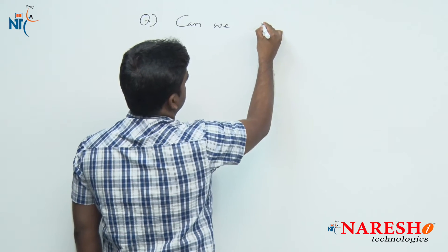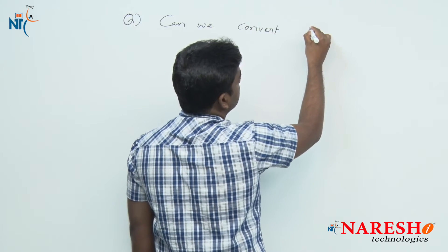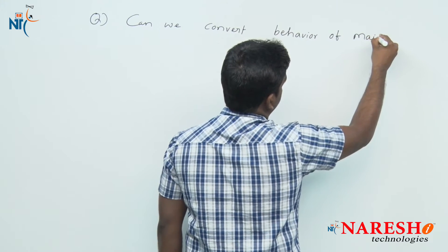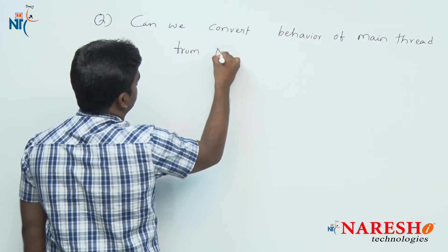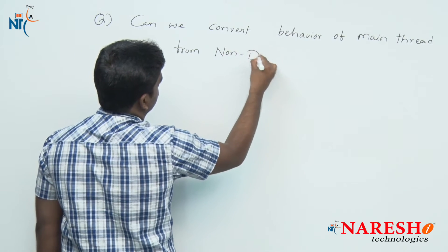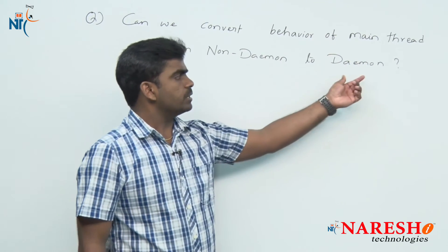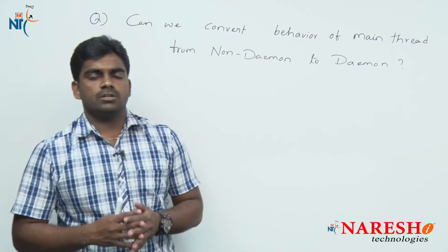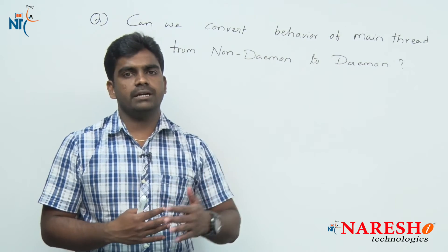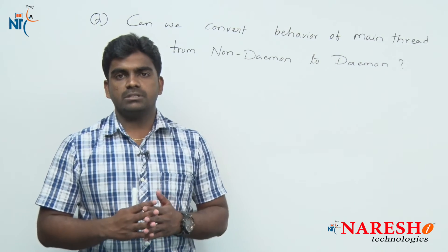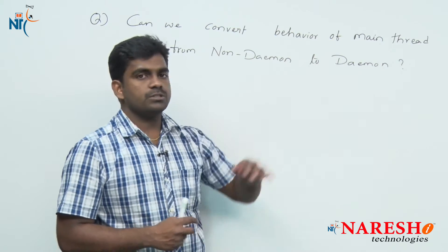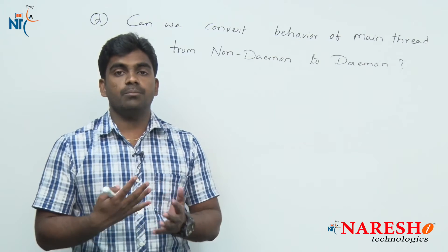The question is: can we change the behavior of the main thread from non-daemon to daemon? First of all, we should know what a non-daemon thread and a daemon thread are. Non-daemon threads execute front-end logic, while daemon threads are service threads — they provide service to the non-daemon threads as back-end threads.